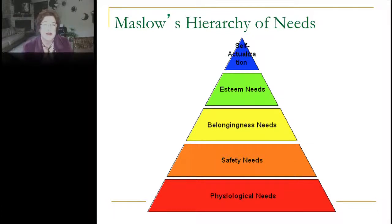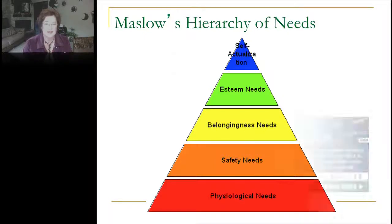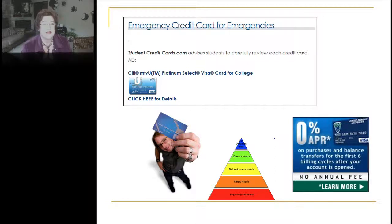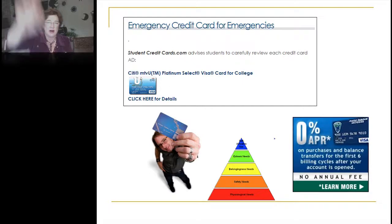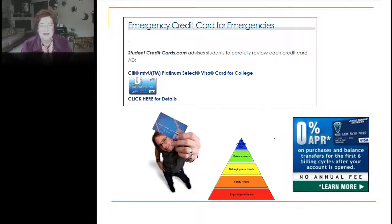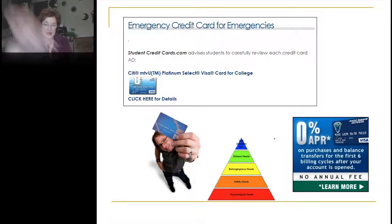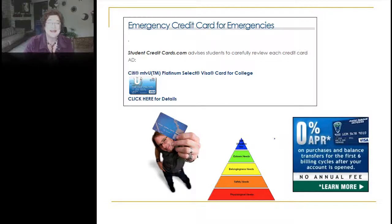Advertisers and motivated communicators are very aware of who they're communicating with and what their audience needs are. Consider credit card advertising. One ad shows an emergency credit card with the cardholder standing under his card like an umbrella — everything about that communication appeals to safety needs. The communicators who designed this message placed their audience in the lower half of Maslow's hierarchy. But do all credit card users need safety? Let's look at Citibank.